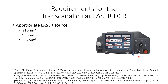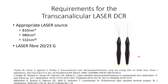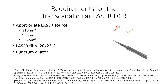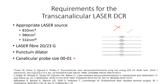We need a laser fiber, either 20 gauge or 23 gauge. The bent probe is not the one to be used — it is shown only for reference. The straight laser probe, marked here in green, is the correct choice. We also need a punctum dilator — a pointed-tipped metal instrument, also known as Nettleship's punctum dilator — which provides access to the puncta. A canalicular probe in sizes 0-0 to 0-1 is also required.